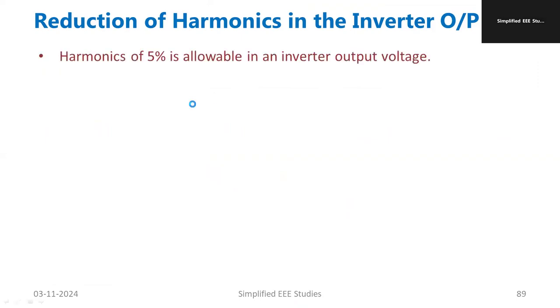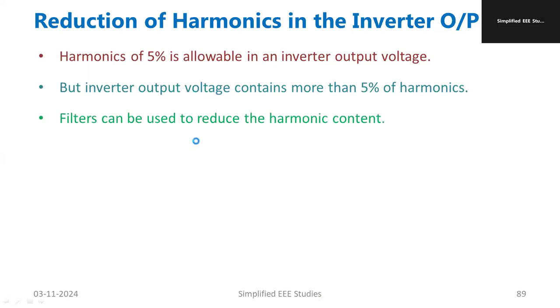You know that a five percentage of harmonics are permitted for every type of inverters, but if the percentage of harmonics is more than five percentage that is not tolerable because that will severely impact on the power quality. Moreover the lifespan of the equipments will be reduced.